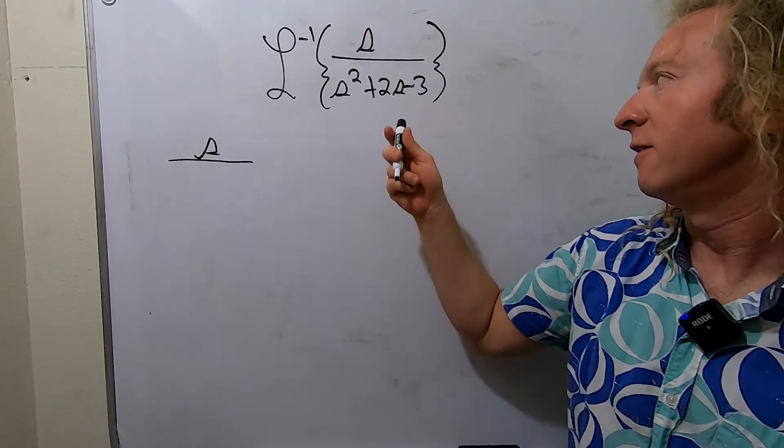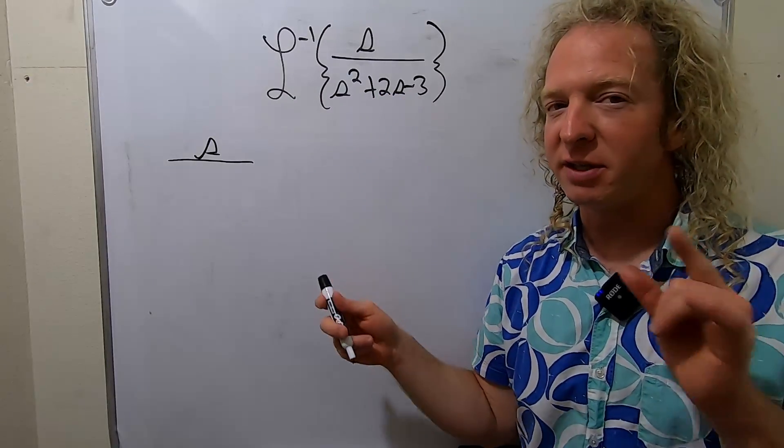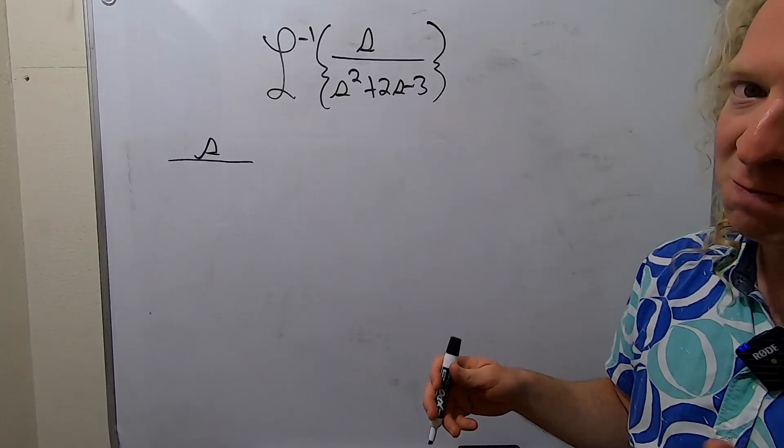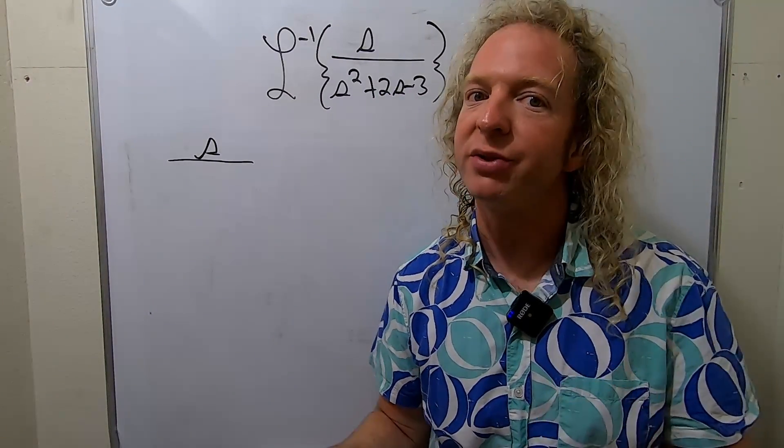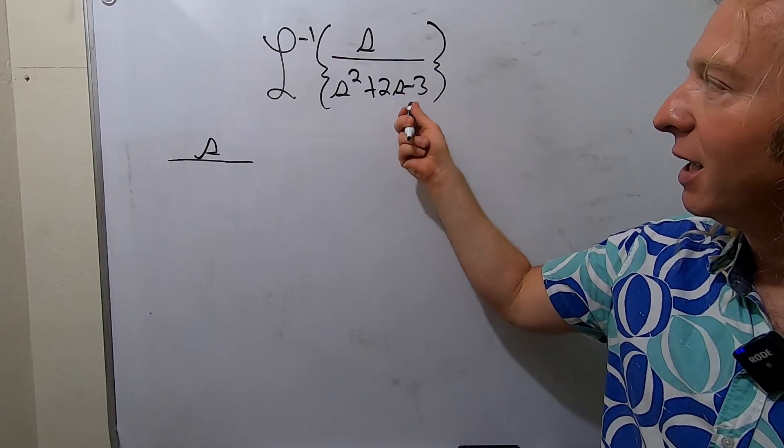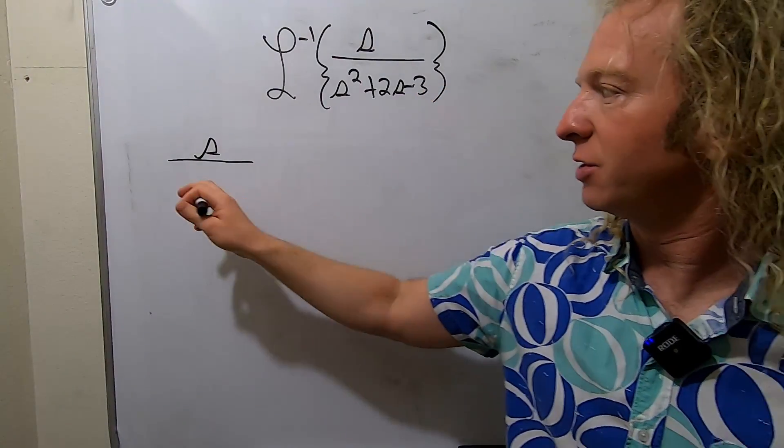And then let's think. If this factors, we should factor it. If it doesn't factor, then the next best strategy would be to complete the square. I think it's going to factor. Let's try it.